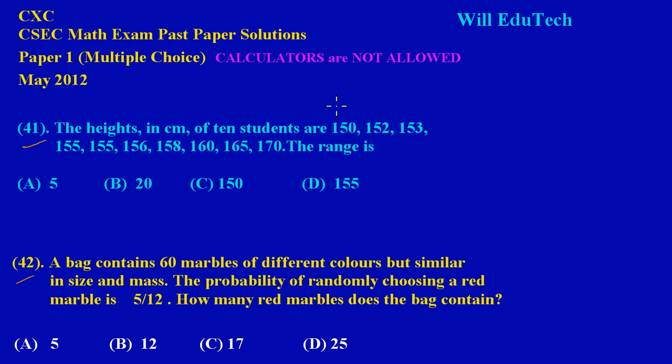Question 41 states: The heights in centimeters of 10 students are 150, 152, 153, 155, 155, 156, 158, 160, 165, 170. The range is? They have given us the heights of 10 students in centimeters and they're asking us to find the range.